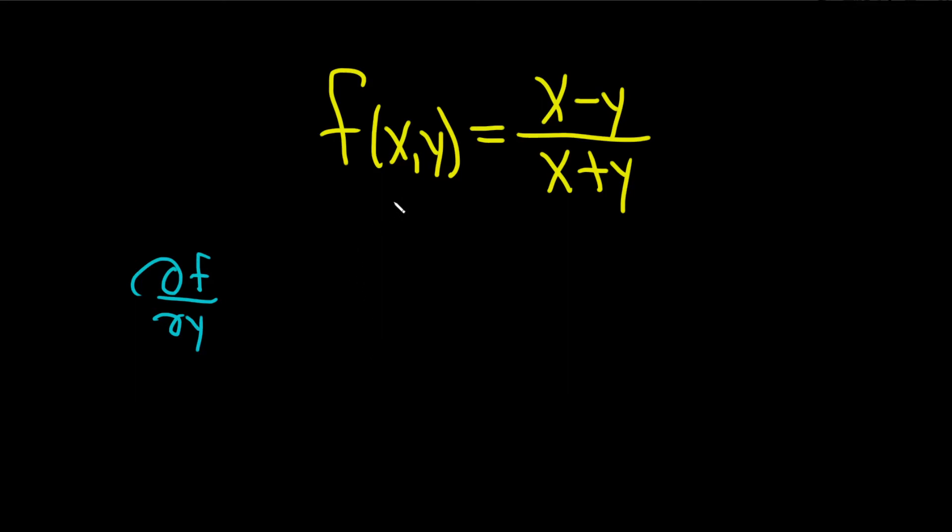In this problem we have a function of two variables and we're going to compute the partial derivative of f with respect to y. To do this we're going to use the quotient rule.